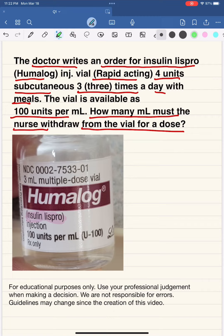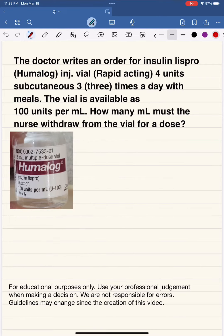The concentration is the most important thing in all your calculations. Let's set this up as a simple ratio. We know that we have 100 units per mL, so just write 100 units per mL.